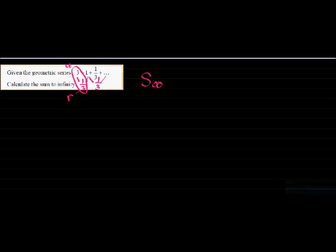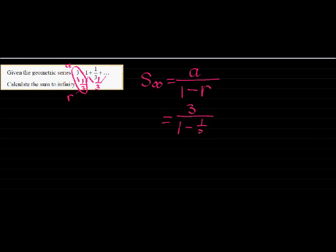So the sum to infinity, which we just had a look at the formula. Here's our formula, where our first term is 3, divided by 1 minus my constant ratio is a third.